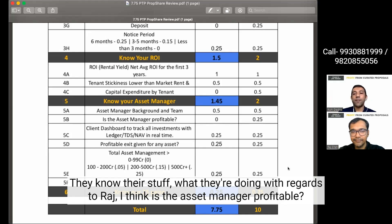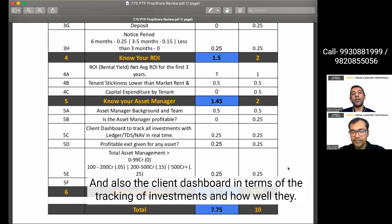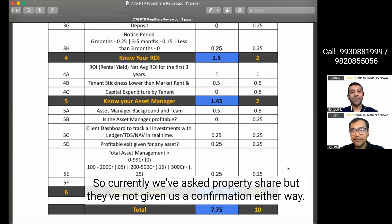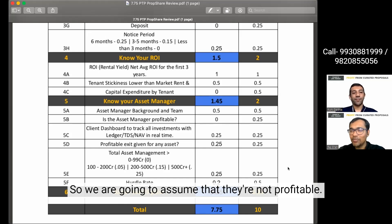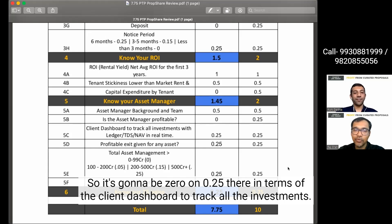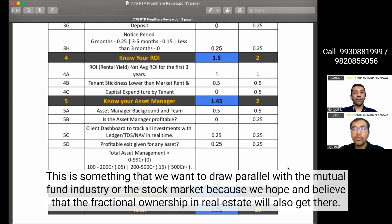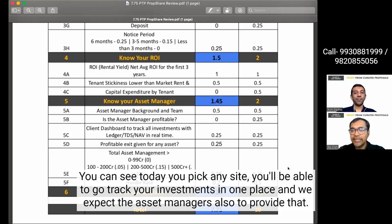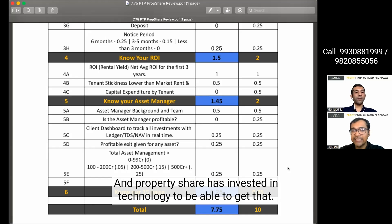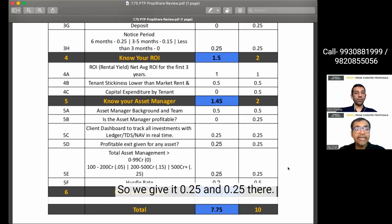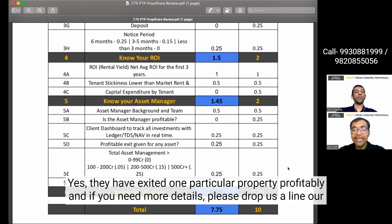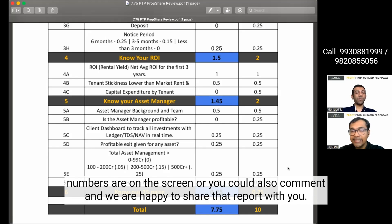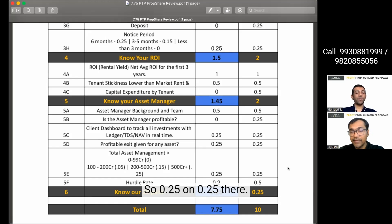With regards to Raj, I think, is the asset manager profitable? Can you throw some light on that and also the client dashboard in terms of the tracking of investments and how well they are equipped? So, currently, we've asked PropShare, but they've not given us a confirmation either way. So, we are going to assume that they are not profitable. So, it's going to be 0 on 0.25. In terms of the client dashboard to track all the investments, this is something that we want to draw parallel with the mutual fund industry or the stock market because we hope and believe that the fractional ownership in real estate will also get there. You can see today, you pick any site, you'll be able to go track your investments in one place and we expect the asset managers also to provide that and PropShare has invested in technology to be able to get that. So, we give it 0.25 on 0.25 there. In terms of profitable exit given for any asset, yes, they have exited one particular property profitably and if you need more details, please drop us a line. Our numbers are on the screen or you could also comment and we are happy to share that report with you. So, 0.25 on 0.25 there.